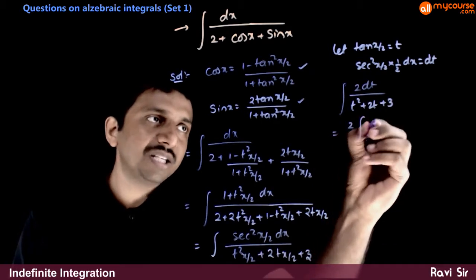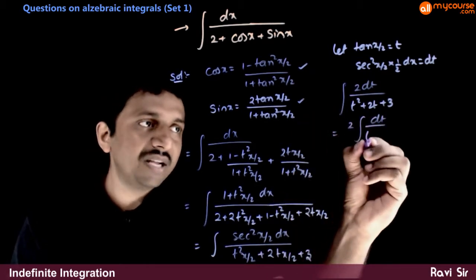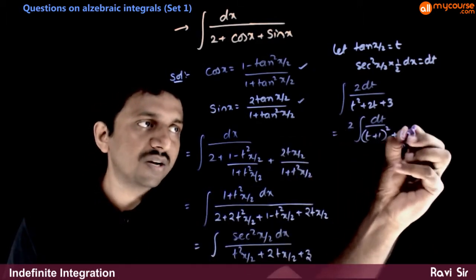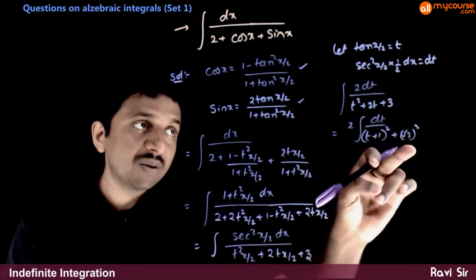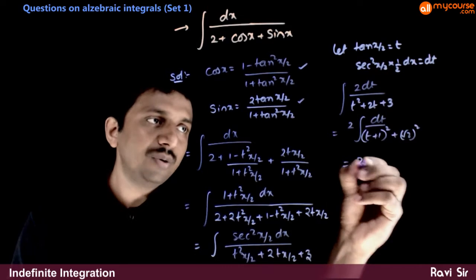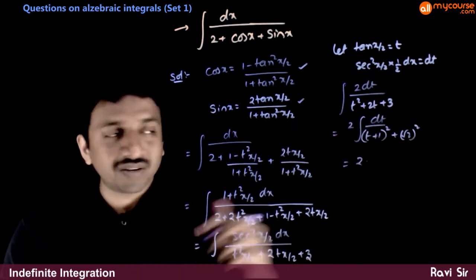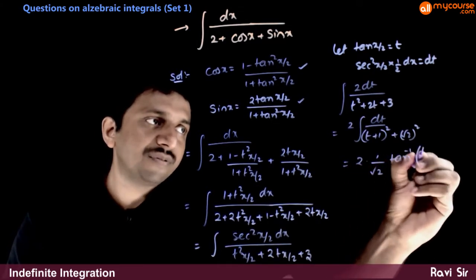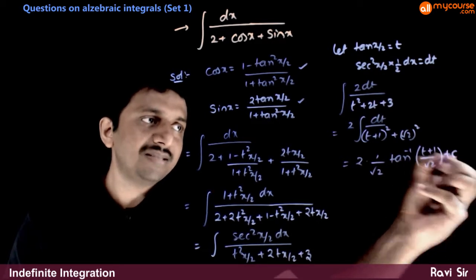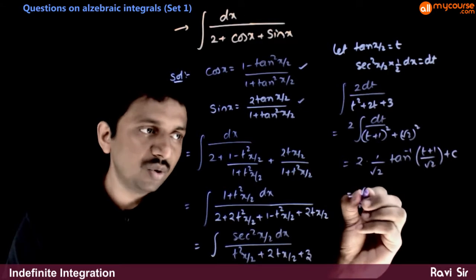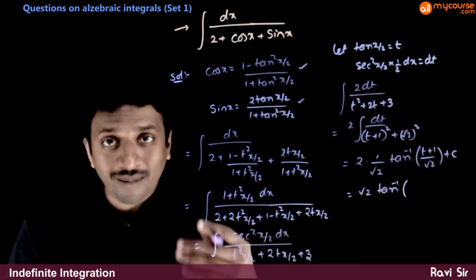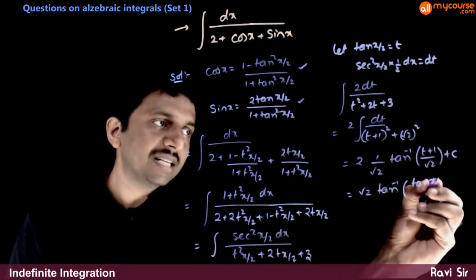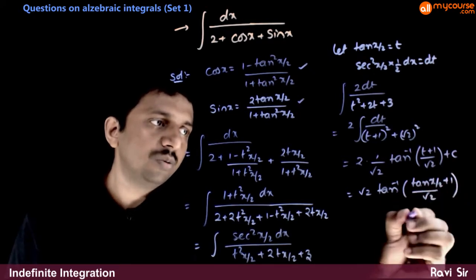The integration becomes 2 dt / (t² + 2t + 3). Using completion of square, the denominator is written as (t + 1)² + (√2)², since t² + 2t + 1 + 2 = (t+1)² + 2. This is of the form dt / (t² + a²), whose integral is (1/a) tan⁻¹(t/a). So the answer is (2/√2) tan⁻¹((tan(x/2) + 1) / √2), which simplifies to √2 · tan⁻¹((tan(x/2) + 1) / √2) + C.